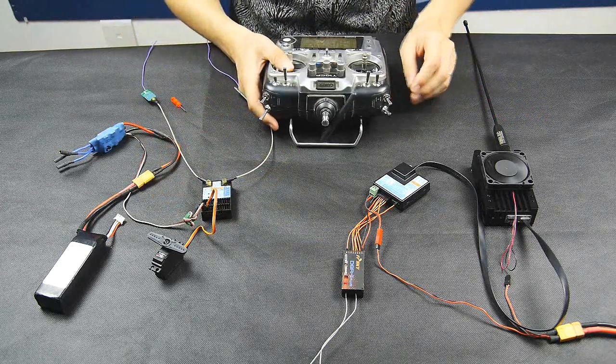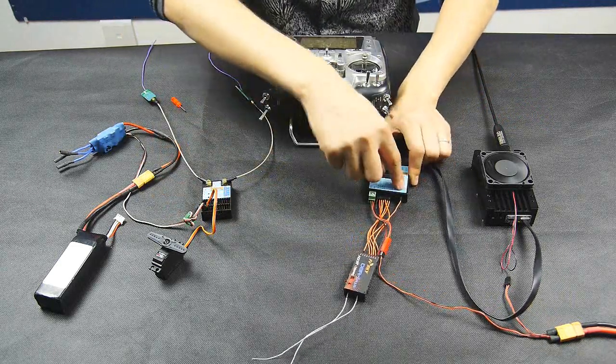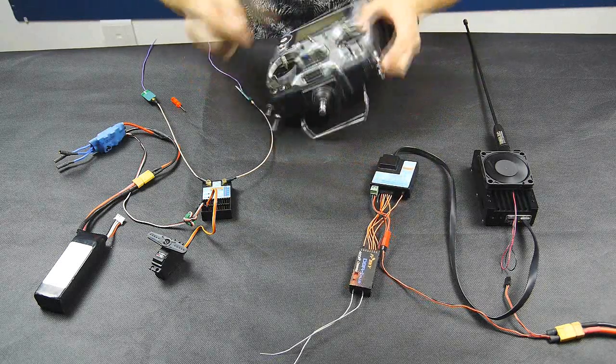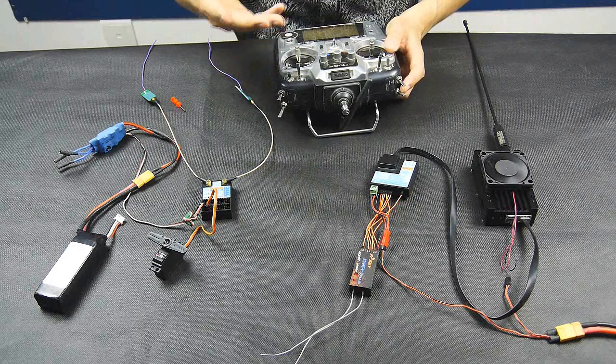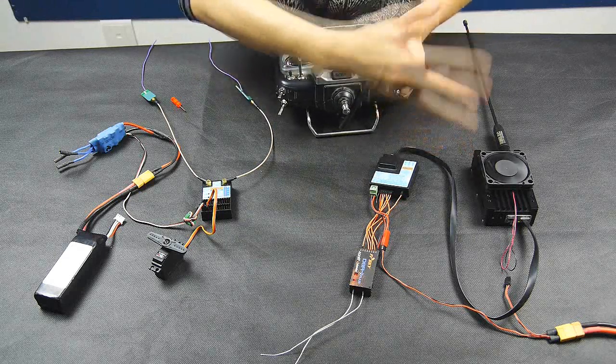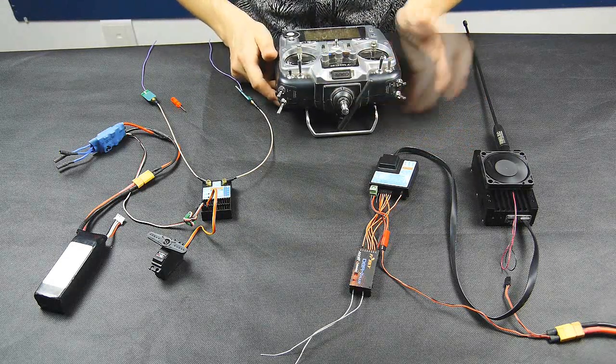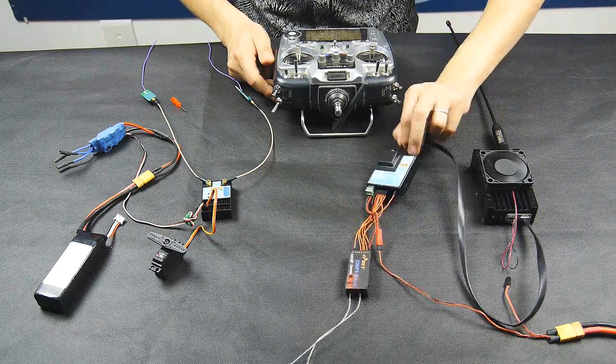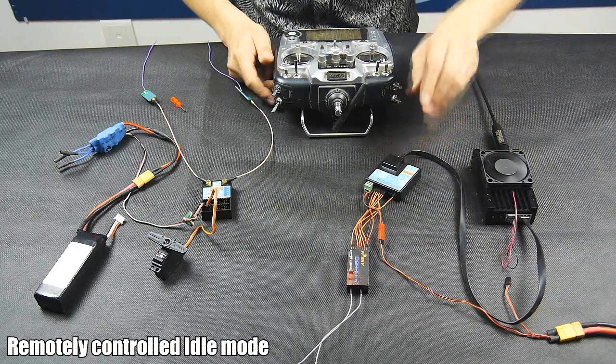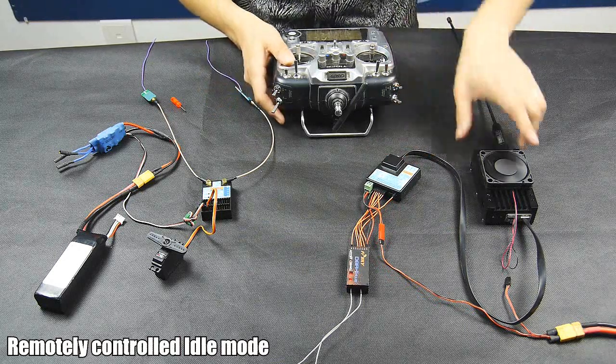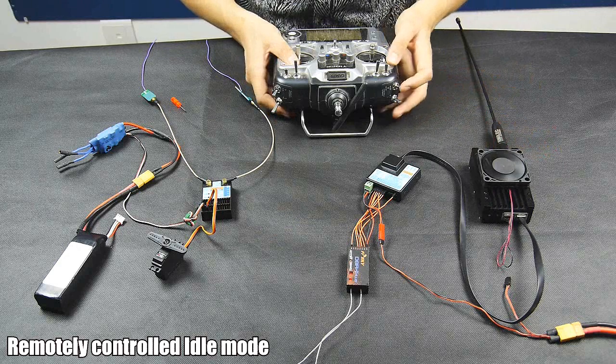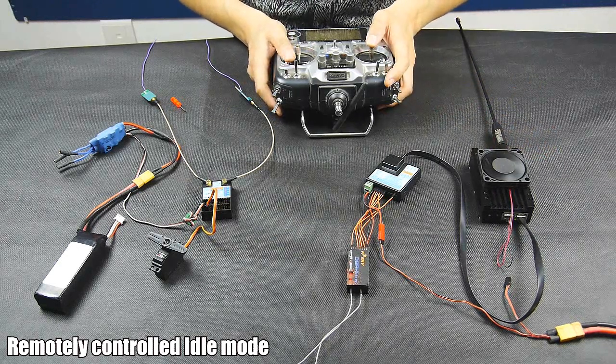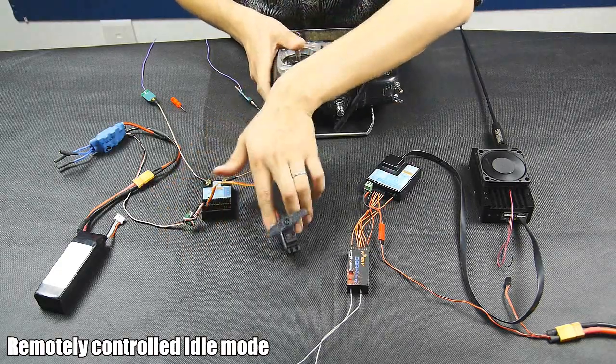So like I said, there are some function pins on this adapter module. Here's one that is idle. I can use one of my switch channels to control the idle mode to turn off the transmitter power. Now the transmitter is turned off. You can see an idle LED lighted on this adapter module, meaning no transmitting power from this transmitter module. Back to work, I can control my servo again.